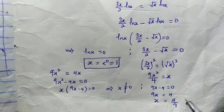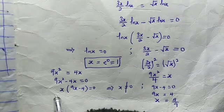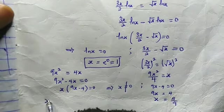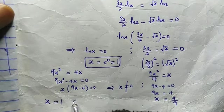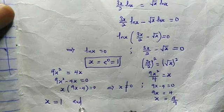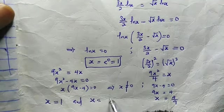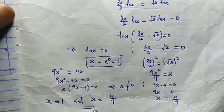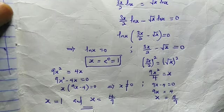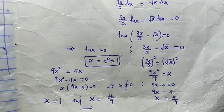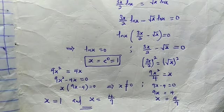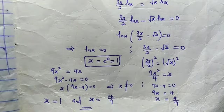And there's the solution. We arrive at the two solutions: x equals 1, and x equals 4 over 9. These are the only two real solutions that satisfy the given equation. Thank you for watching — please kindly subscribe to my channel, and also like, comment, and share.